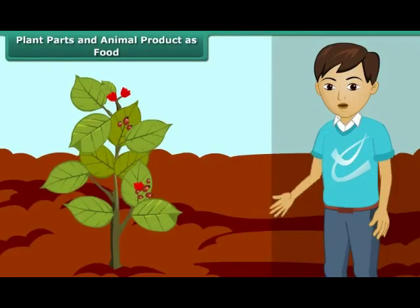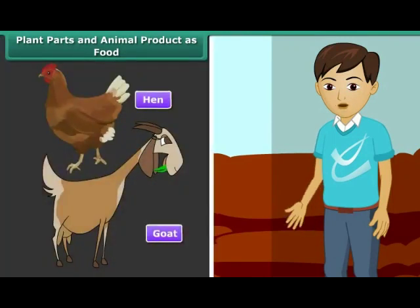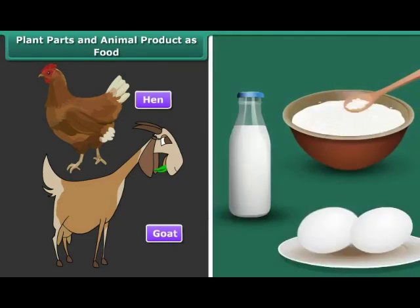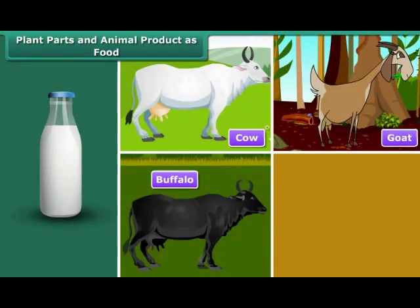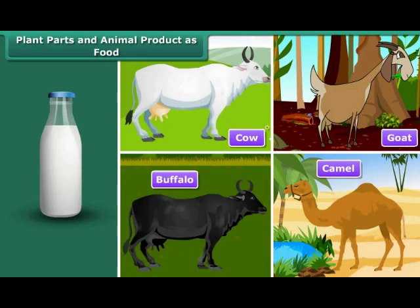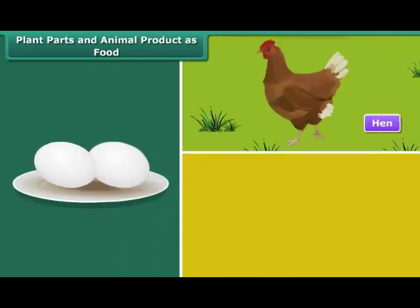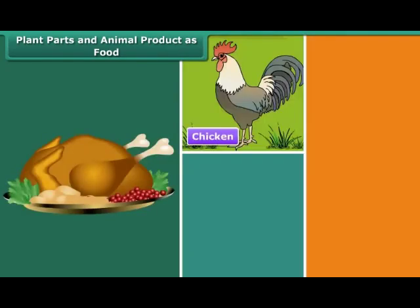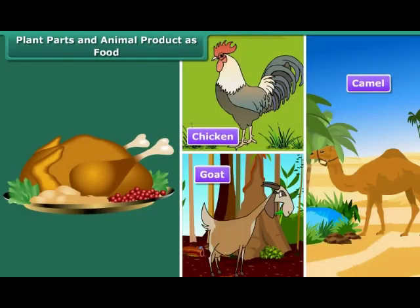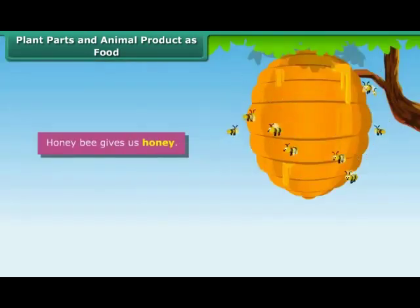Animals also provide us some important products which we eat and drink daily, i.e. milk, curd, eggs. We get milk from cow, buffalo and goat, and even from camel in desert areas. We get eggs from hens and duck. We also get meat from chicken, goat, camel, etc. Fish and prawn are also eaten. Honeybee gives us honey.